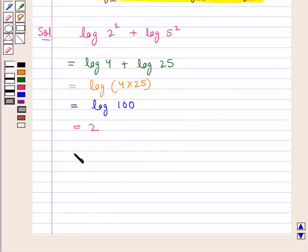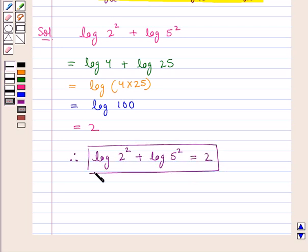Thus, we can say the given expression log of 2 square plus log of 5 square is equal to 2. This is our final answer.